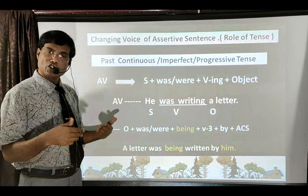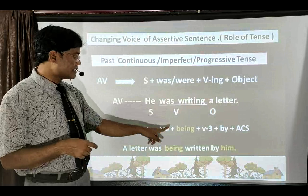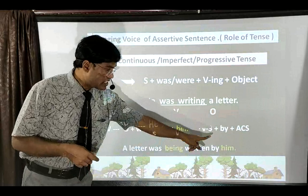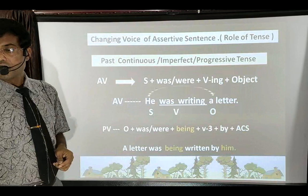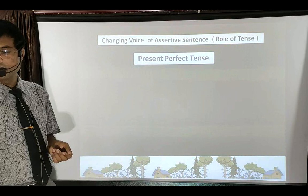Applying the formula: passive voice of 'He was writing a letter' is — 'A letter' (object first), 'was' (since 'a letter' is singular), 'being' (extra word because continuous tense), 'written' (third form of verb), 'by him' (objective case of subject 'he'). So: 'A letter was being written by him.' This is how you make passive voice in Past Continuous Tense.